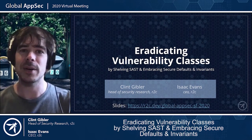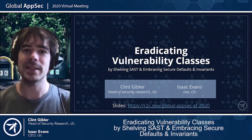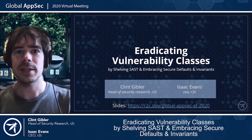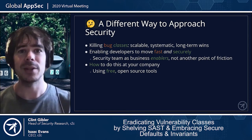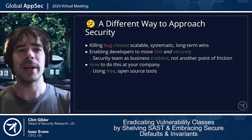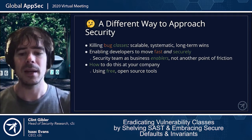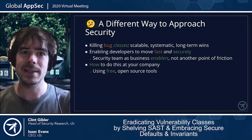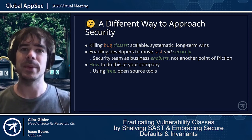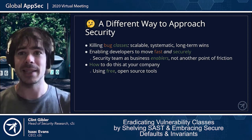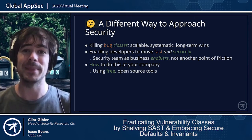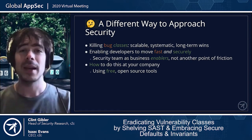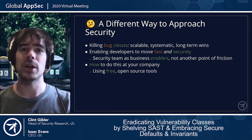Today we're going to be talking about eradicating vulnerability classes by shelving SAST and embracing secure defaults and invariants. This talk takes a different angle than many tools talks and the industry as a whole. It will enable us to focus on killing bug classes rather than one-off ad hoc wins, be scalable and systematic, enable developers to move fast and securely, and cover a methodology with concrete action steps using free and open source tools.